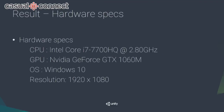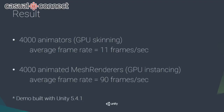Here are the benchmark hardware specs: i7 2.8 GHz with a GTX 1060, Windows 10, running at Full HD. The result: 4,000 animators with GPU skinning gave around 11 frames per second on average. GPU instancing with mesh renderers gave 90 frames per second.